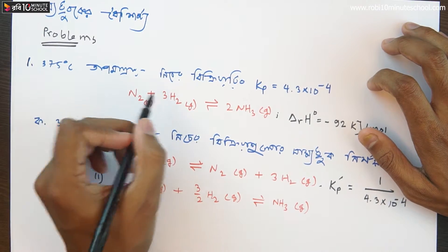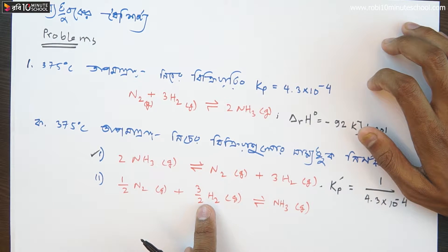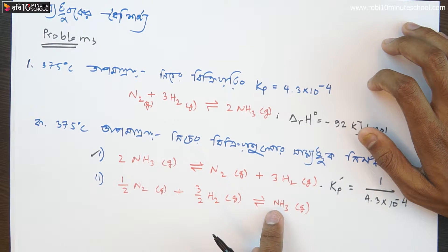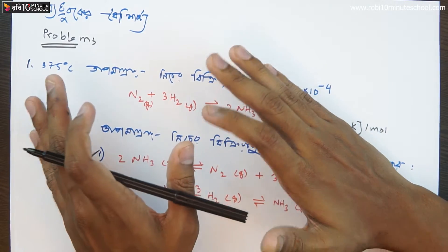Nitrogen 1, hydrogen 3, and ammonia 2. Nitrogen 1, hydrogen 3 by 2, ammonia is 1. So this change is of 1. If you want to make a pattern, don't miss the pattern.